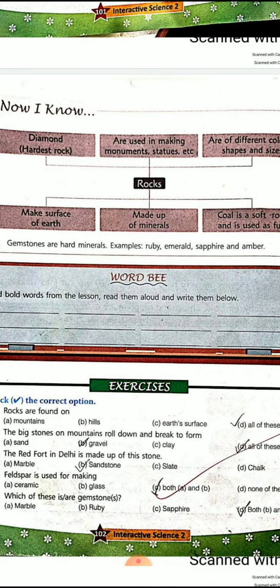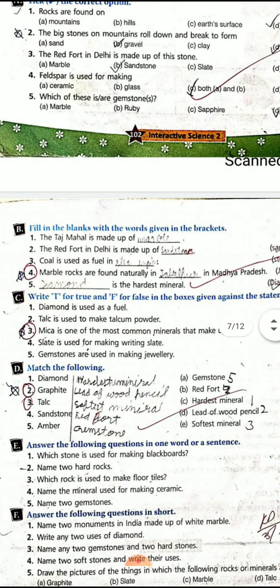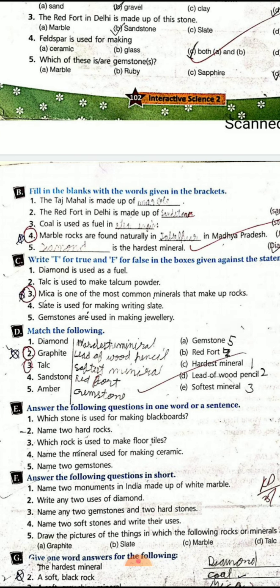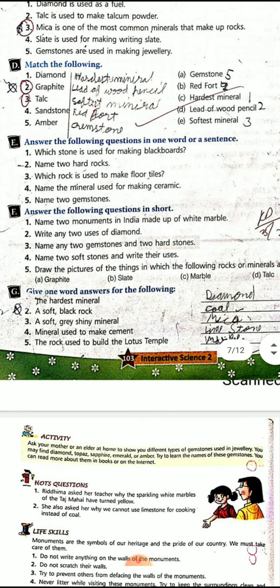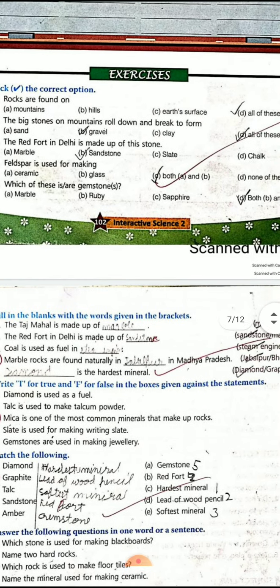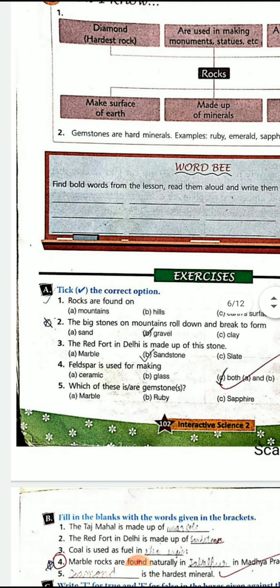Your homework is to go through the full chapter once again. If you have any problem, go back and look at the explanations given in the chapter. Do the word be, take the correct option, fill in the blanks, true and false, and match the following in the book. In the next class we will discuss the exercises and then do the question and answers. Take care children, bye.